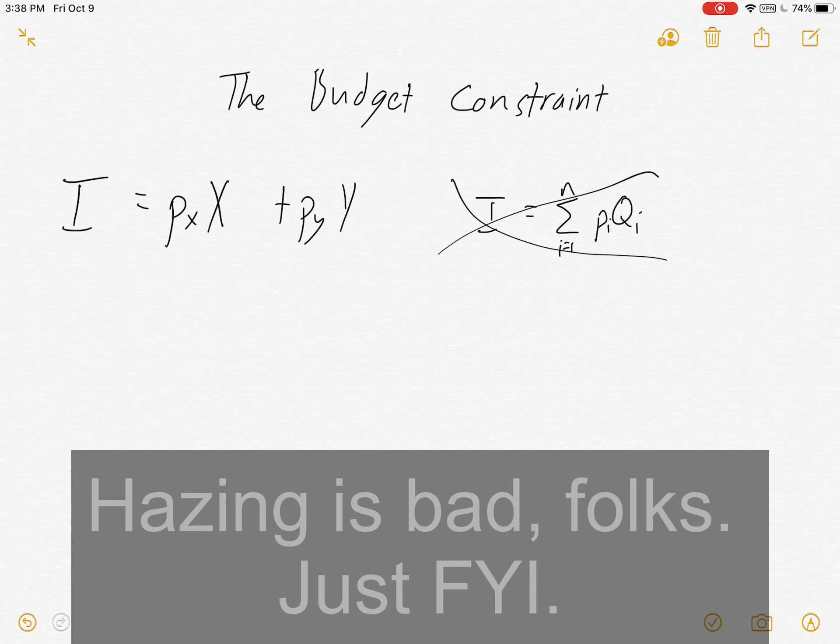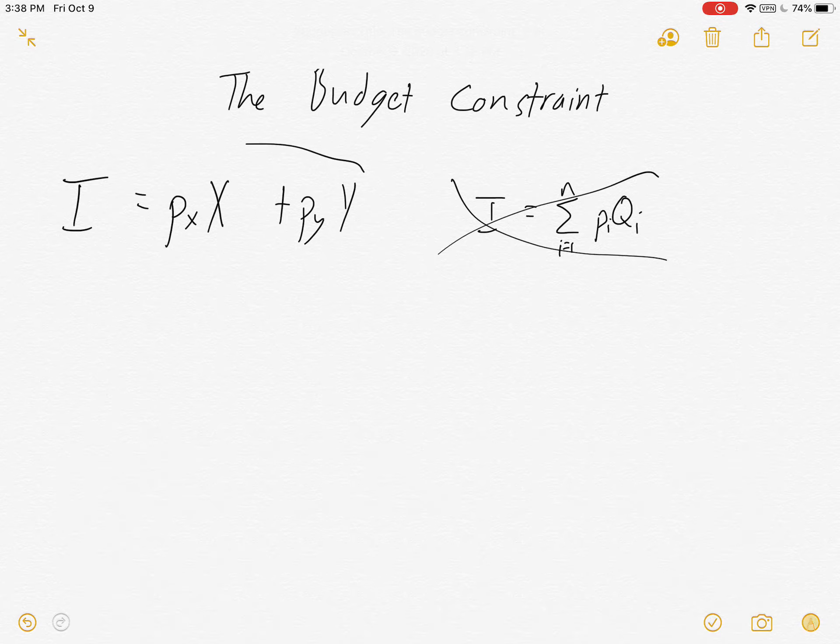Anyway, an example of our simple budget constraint with just two goods: the income is equal to a hundred dollars and we can spend that money on hamburgers or socks. The price of a hamburger is four dollars and the price of some socks is two dollars.